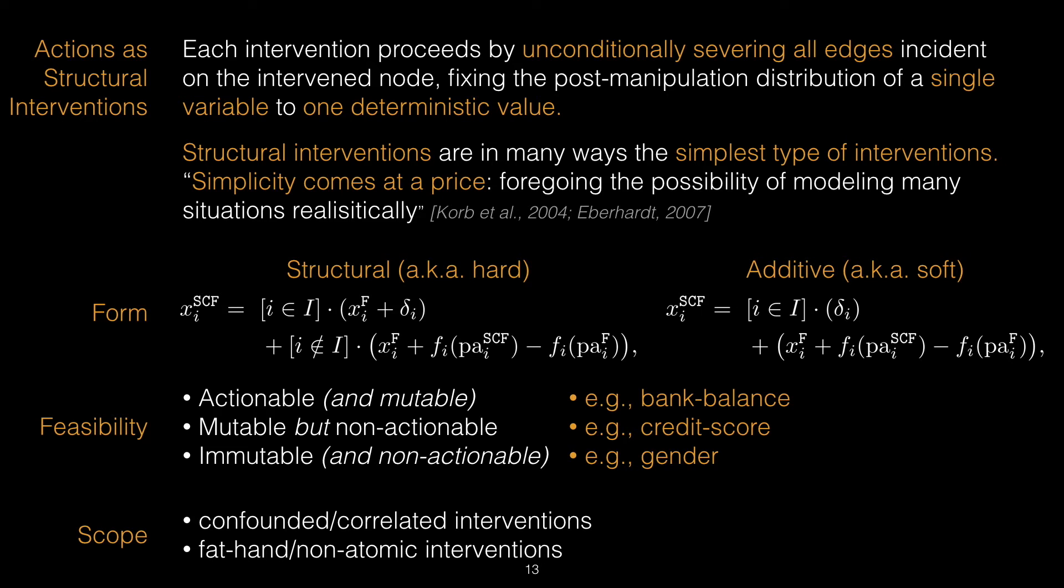An example of this is credit score, where intuitively the credit score is not directly actionable by the individual, but may change as a consequence of a change to its causal ancestors, for example, regular debt payment. Of course, this example assumes that a bank would not recommend fraudulent actions that may allow direct intervention on the variable credit score.